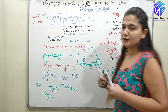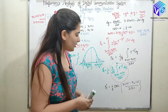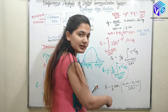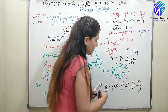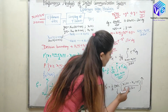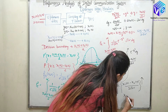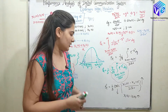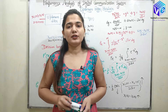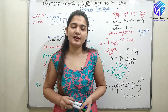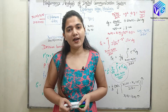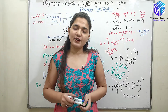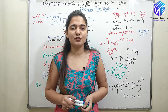This is the final probability of error expression for the optimum filter. The error function is a decreasing function, so if we increase the difference (X1(T) minus X2(T)), the numerator increases, the ERFC value decreases, and the probability of error decreases. So this was all about the probability of error of the optimum filter. If you have any doubts, put them in the comment box and I will resolve them. Please share the video, subscribe to the channel, and push the like button. Thank you.